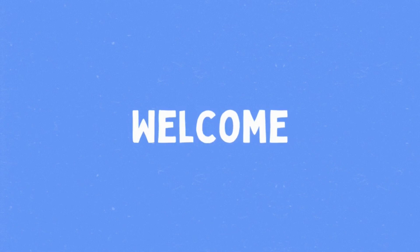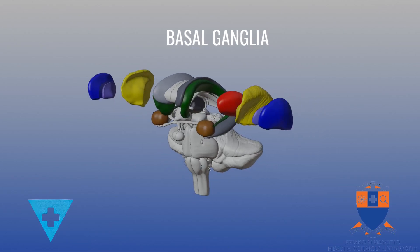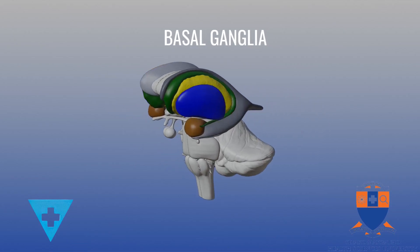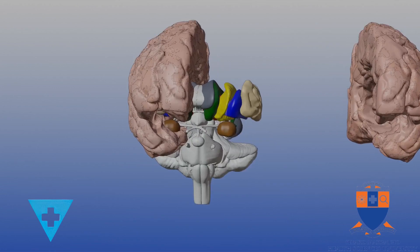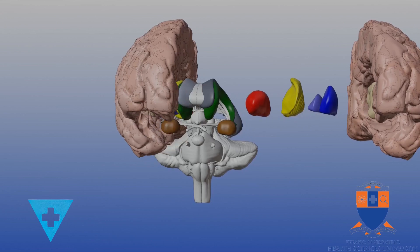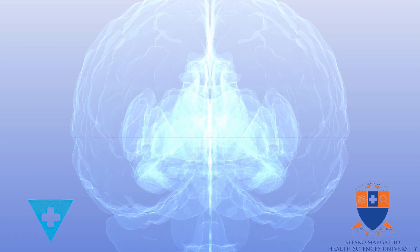Welcome to this short educational video on the basal ganglia of the brain. The basal ganglia, as their name suggests, are a set of interconnected structures located deep within the cerebral hemispheres, close to its basal or inferior surface.